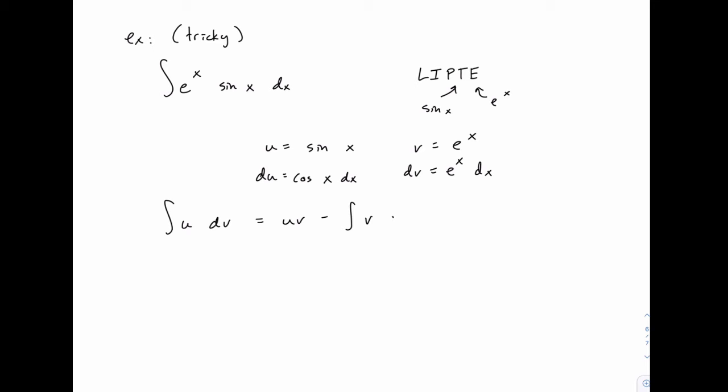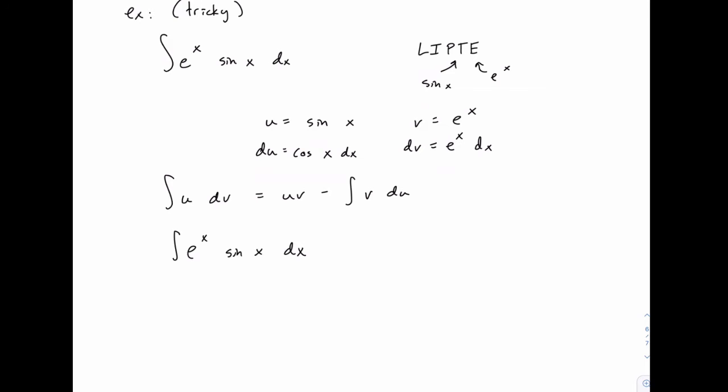So in our example, that would be the integral of e to the x times sine of x dx equals u times v, that would be e to the x times sine of x, minus the integral of v du. So that would be e to the x cosine of x dx.